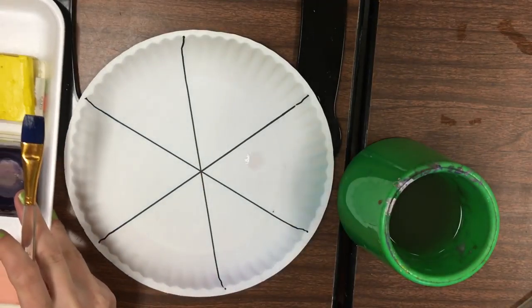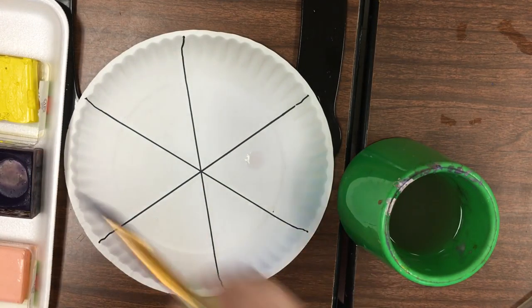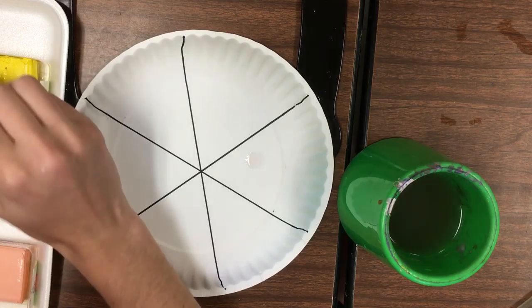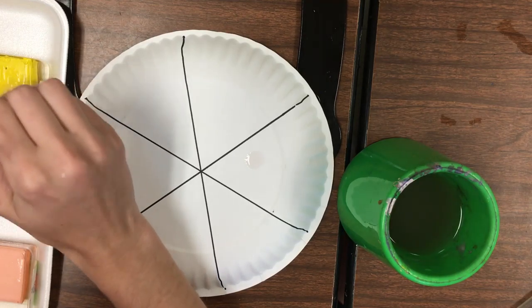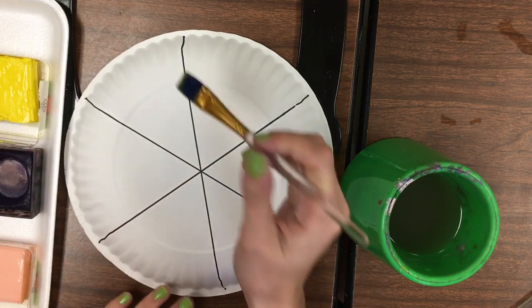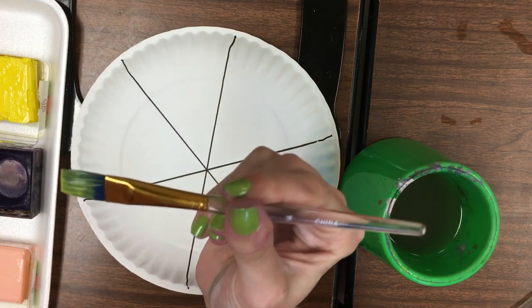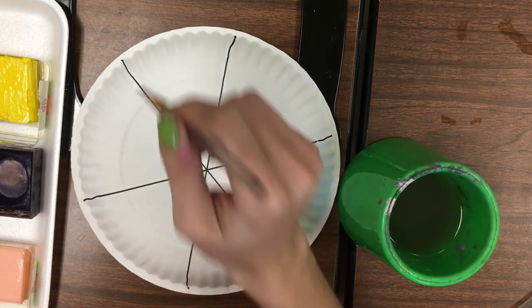We're going to start just like we did our color wheels for practice. You guys are going to have the primary colors first. I want to point out how big my brush is—it's super big because you guys have a lot of surface area to cover.